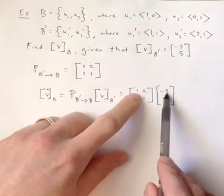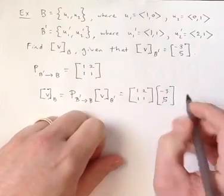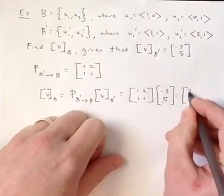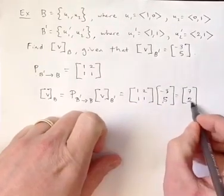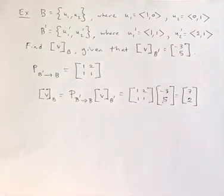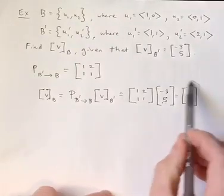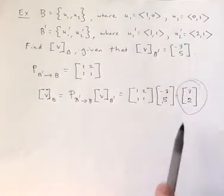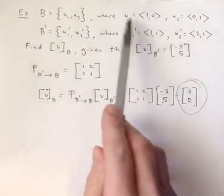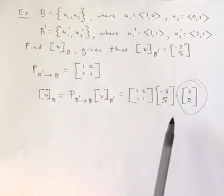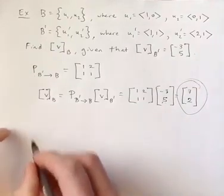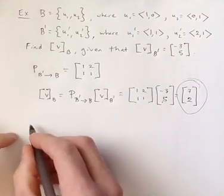So this is going to be negative 3 plus 10, so 7 as that first entry, and then negative 3 plus 5, which is 2 for the second one. So that ought to be our answer. Right? And in fact, that's the coordinate vector relative to the standard basis, which means the vector ought to be the vector 7, 2. So let's check that just to see if that's right.